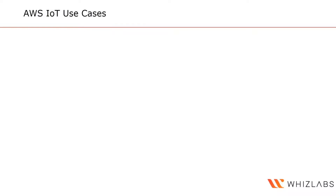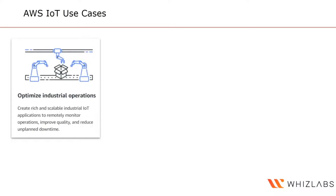What are some IoT use cases? One of the most popular is optimizing industrial operations. AWS IoT Core allows applications to remotely monitor factory machines, improve quality, and reduce unplanned downtime. For example, a vibration sensor on a machine can establish a normal vibration range, and when vibrations increase, it signals that maintenance is needed rather than waiting for the machine to break down.